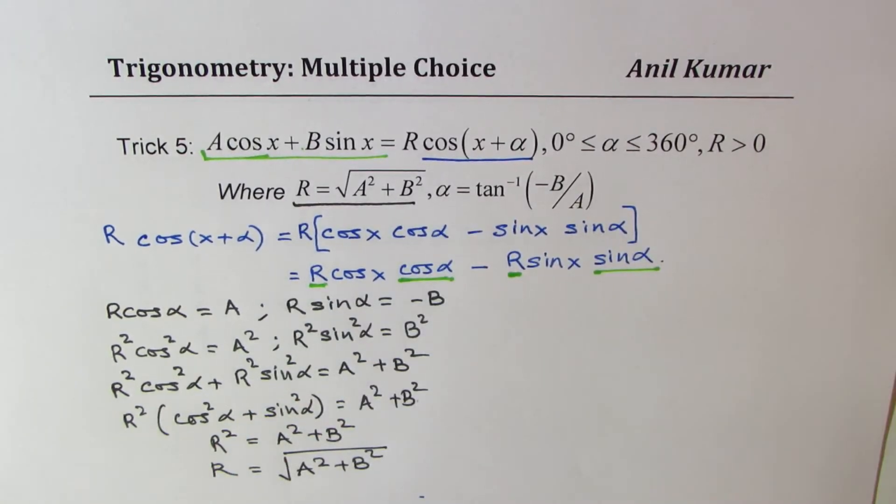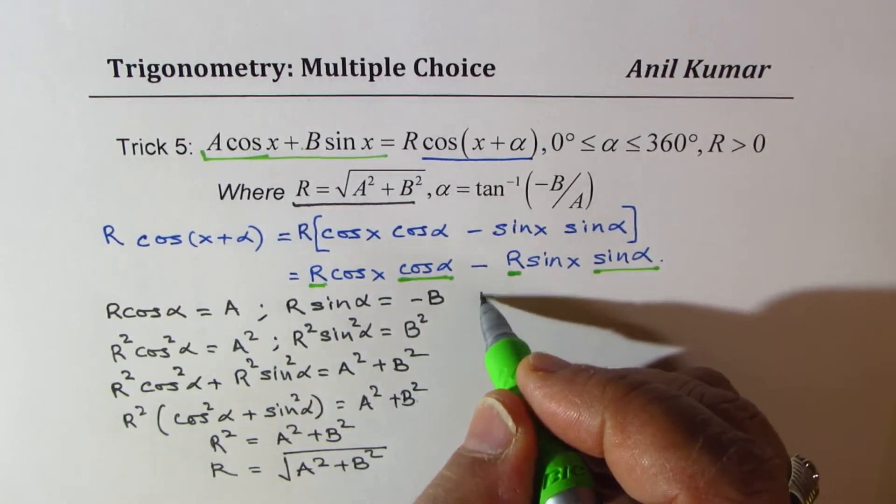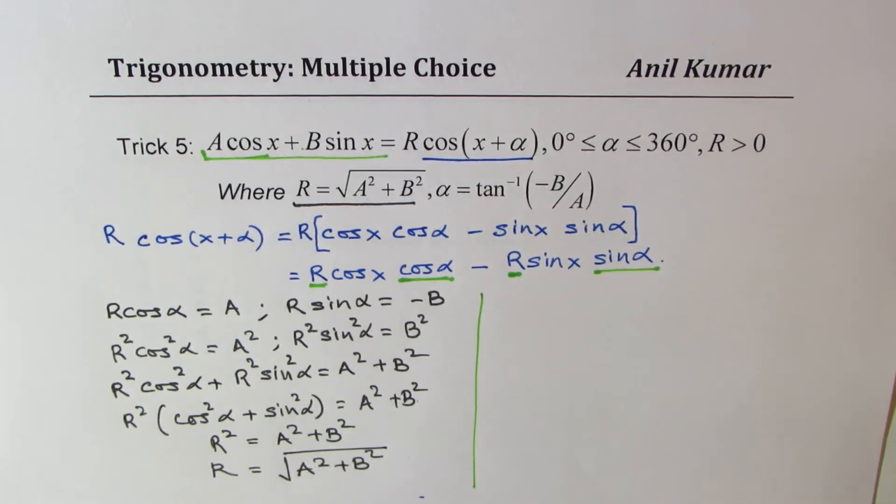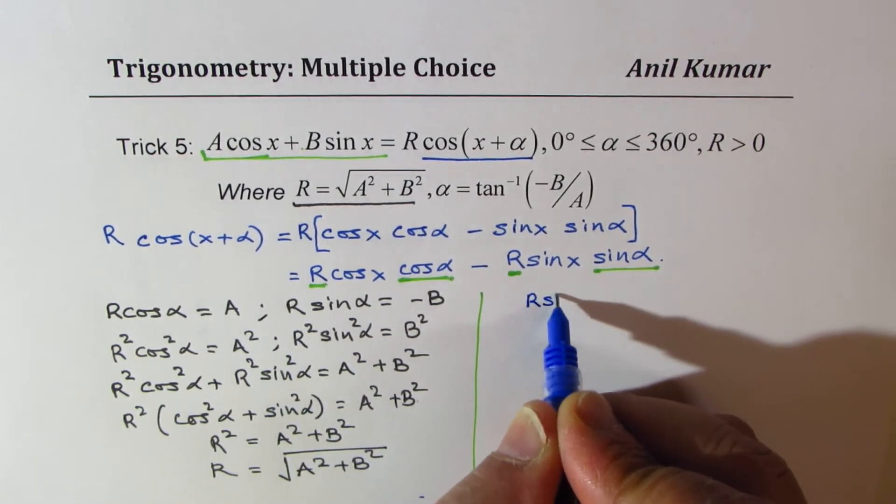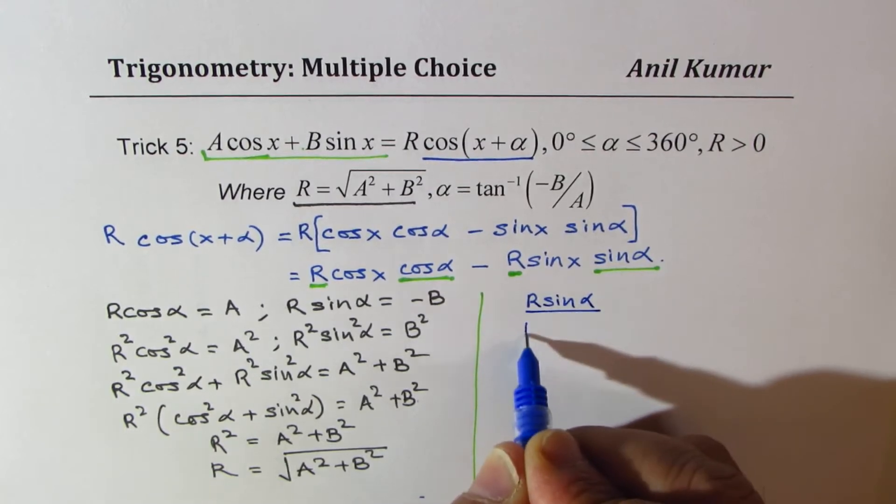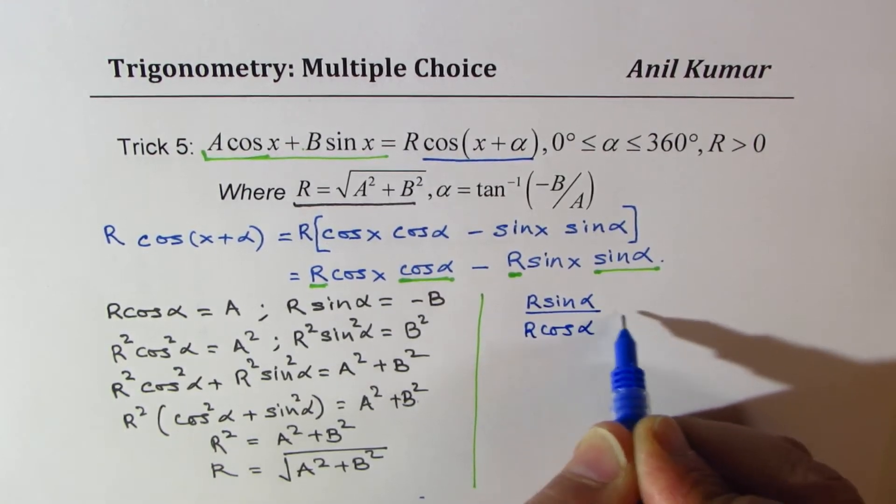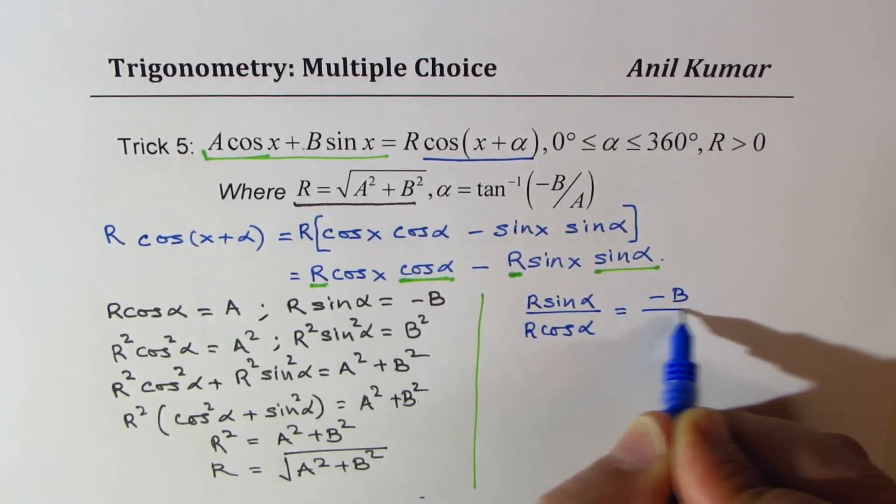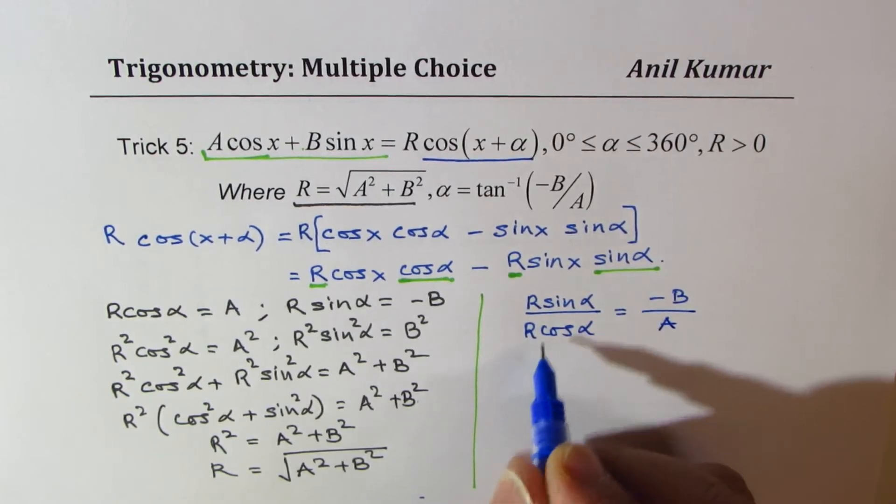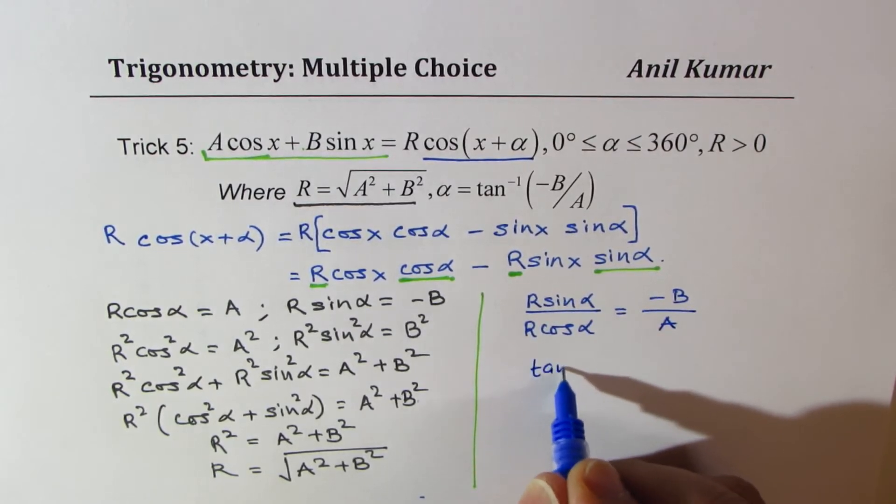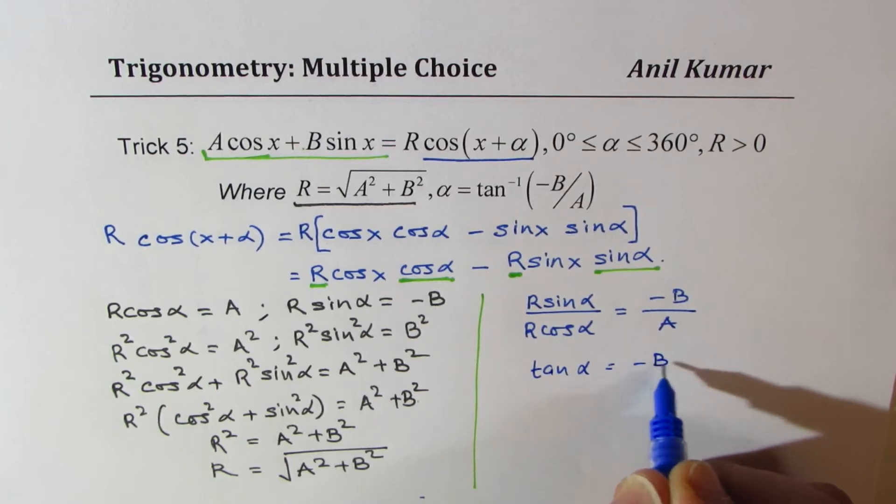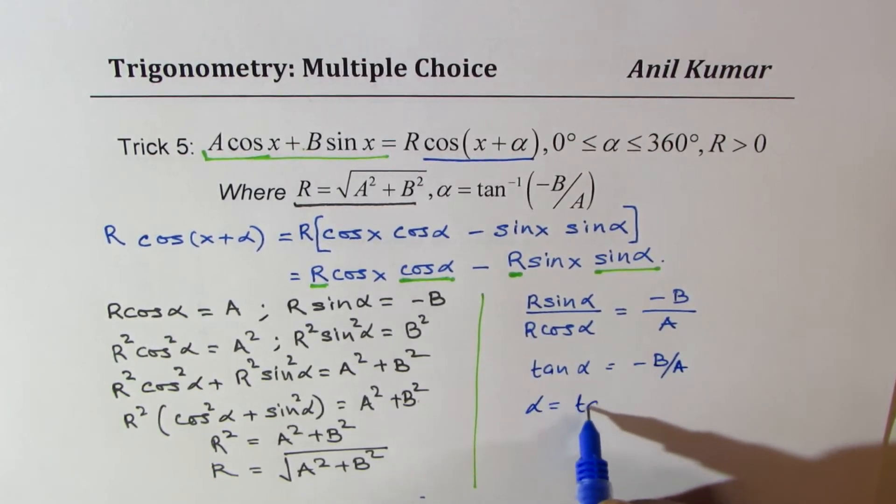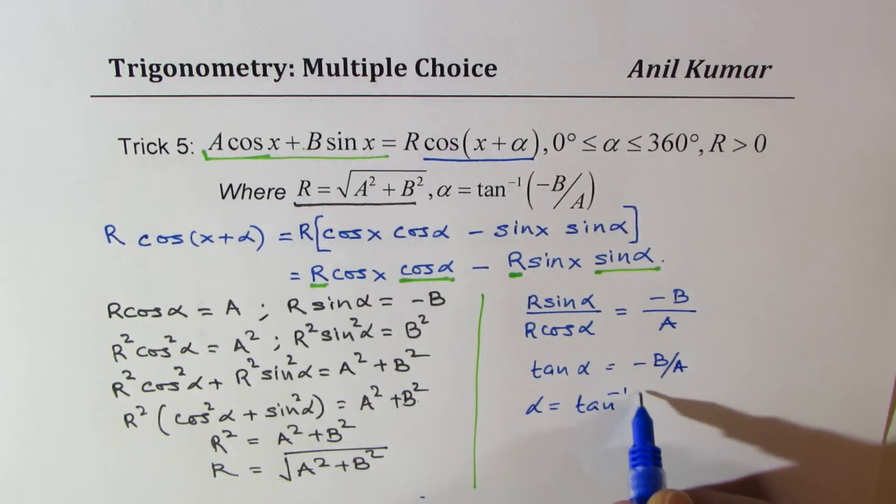Now to get the angle, let's divide one by the other. We could do R sin alpha over R cos alpha, that will be minus B by A. R and R cancel, so we get tan alpha equals minus B by A, and alpha equals tan inverse of minus B by A.